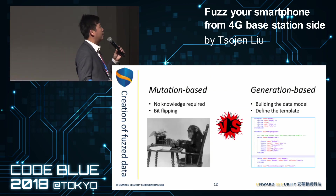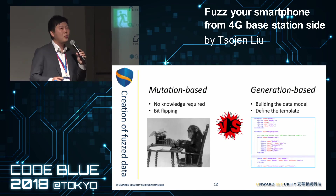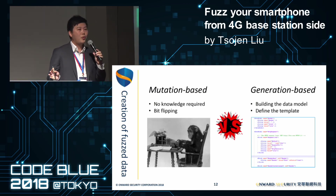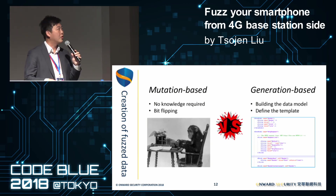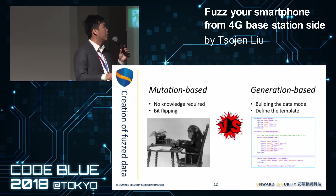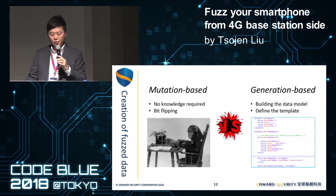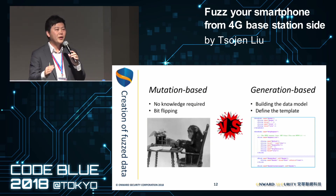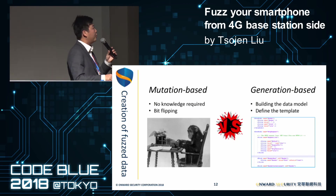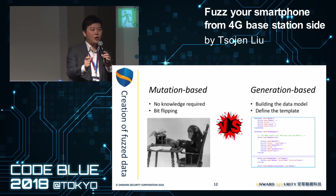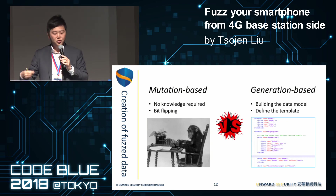When generating fuzzing data, there are two major methodologies. The first is mutation-based — no protocol knowledge is required; you just perform bit-flipping on the captured data. The other is generation-based: you need to know the protocol, build a data model specifying how many fields and what kind of data the protocol uses, define a template, and for each field in the template you want to fuzz, use your fuzzer to generate a large amount of data.